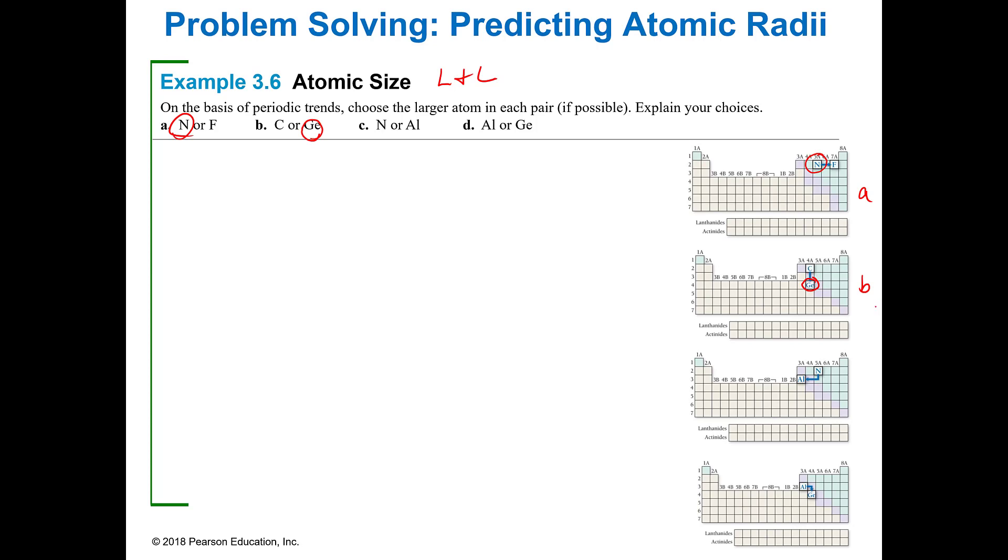Once you get the hang of it, it's super easy. All right. Let's look at C, nitrogen or aluminum. If atomic radius is left and low, then the one that's lifter and lower is going to be correct. And that would be in this case, aluminum.